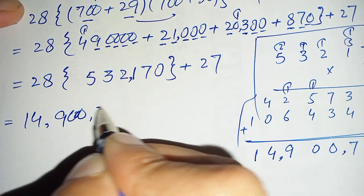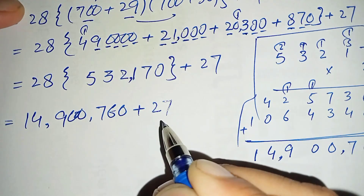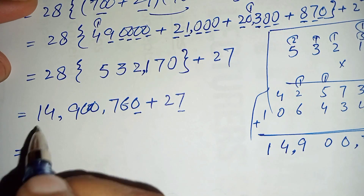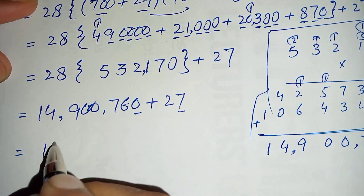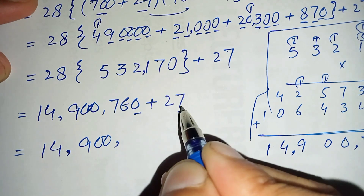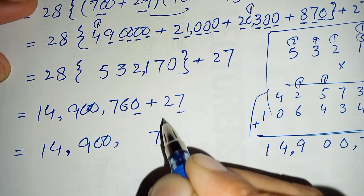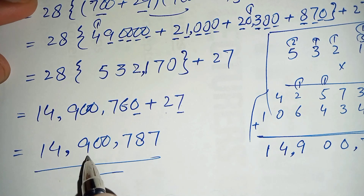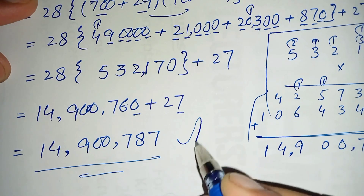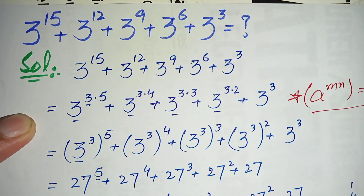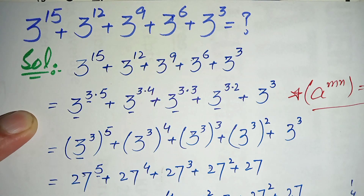Finally, we add 14,900,760 plus 27: 0 plus 7 is 7, 6 plus 2 is 8, and the remaining digits stay the same. So the final answer is 14,900,787. This is the value of the interesting exponential math problem. If you liked this video, don't forget to subscribe to my YouTube channel. Thanks for watching.